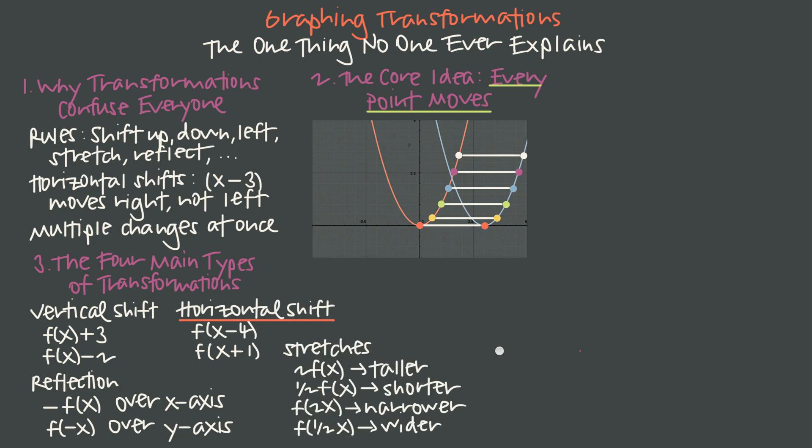And then finally, stretches and compressions, where multiplying the function by a value greater than 1 is going to make it taller. It's going to stretch it out vertically, whereas multiplying the function by some value between 0 and 1, so a positive fraction here, is going to make the graph shorter. It's going to compress it or squish it down vertically. So these two here are vertical.